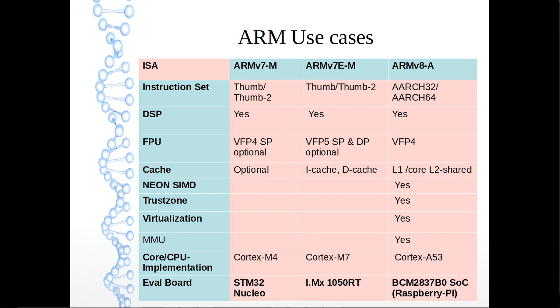Regarding the FPU: in ARM version 7M, VFPv4 single precision is mentioned as optional. In ARM version 7EM, single and double precision floating point is also mentioned as optional. In ARM version 8A, VFPv4 is available. 'Optional' means the architecture has a provision, but it's up to the device vendor whether they implement it. Similarly for cache: ARM version 7M has optional cache, ARM version 7EM has instruction and data cache, and ARM version 8A has L1 cache per core.